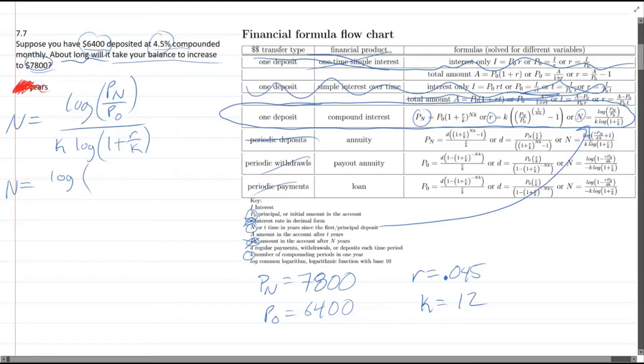So we have log of 7,800 divided by 6,400 divided by 12 times log 1 plus R over K, 0.045 divided by 12.